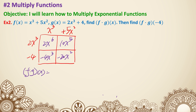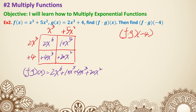And negative 4 times 5x squared is negative 20x squared. So f times g of x — there's nothing to combine because we have a sixth power, fifth power, third power, and second power — so we put them in standard form: 2x to the sixth plus 10x to the fifth plus 4x cubed plus 20x squared. Actually, I copied it wrong — it's a plus, so these are all positive. For plugging in, I'm going to do it separately: f times g of negative 4 is the same as f of negative 4 times g of negative 4.